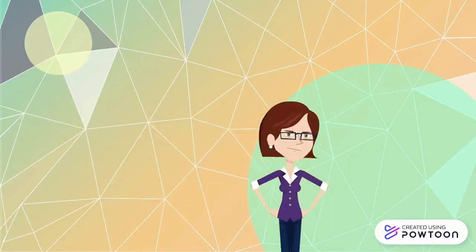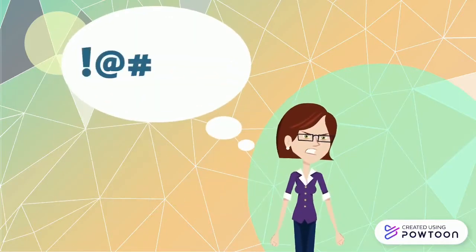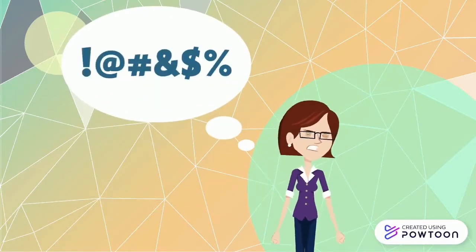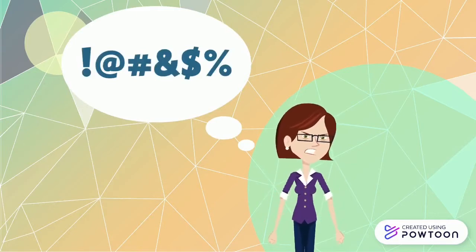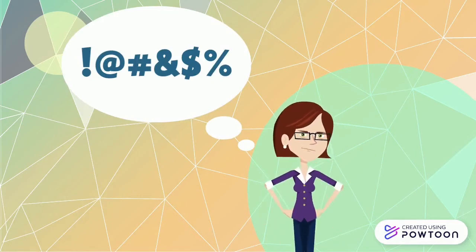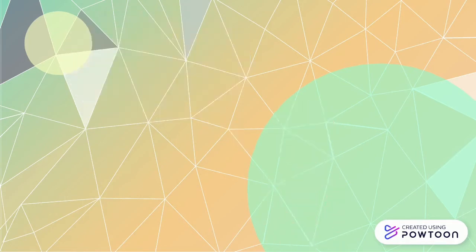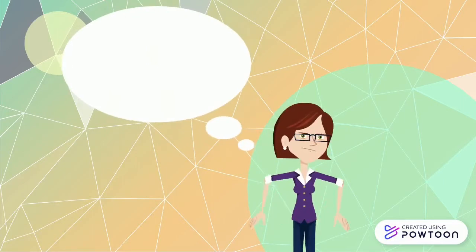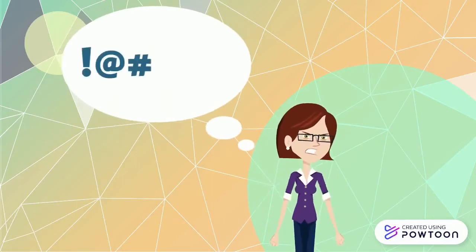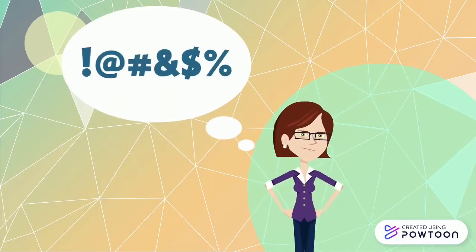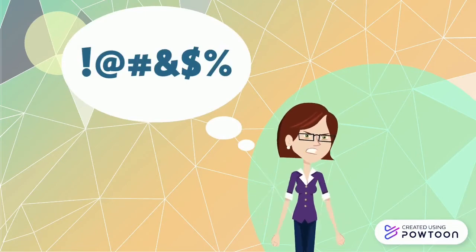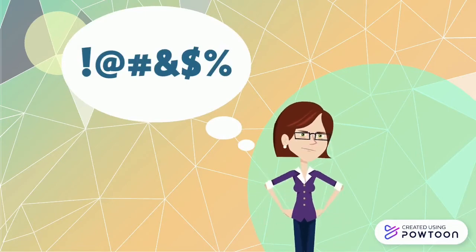Luna and George have been arguing lately. Luna alleges that George is engaging in improper practices in buying and selling carpets and flooring from a friend in Italy and is receiving secret profits. George strongly denies these allegations. Due to Luna's allegations, Peter and George exercise their majority voting power at a general meeting to have Luna removed from the board of directors.